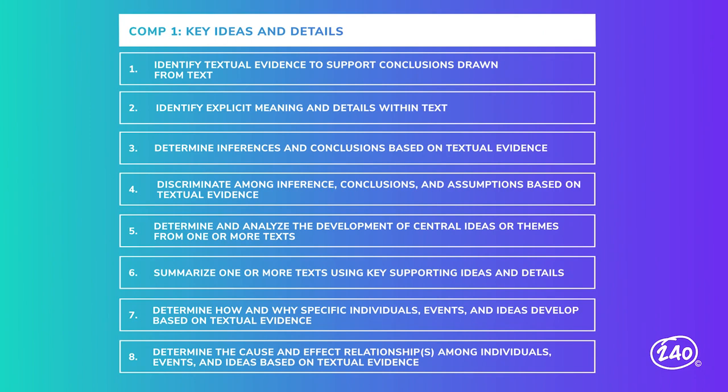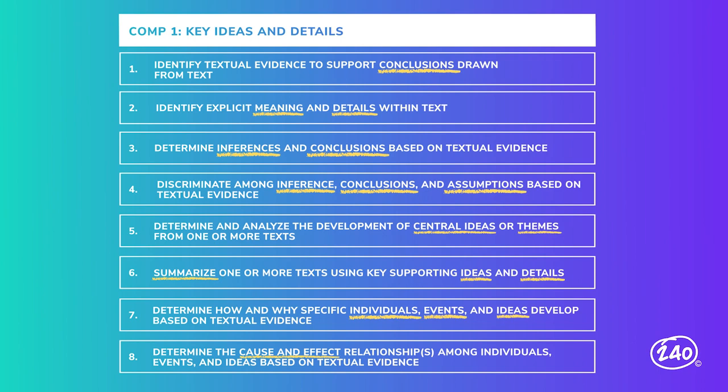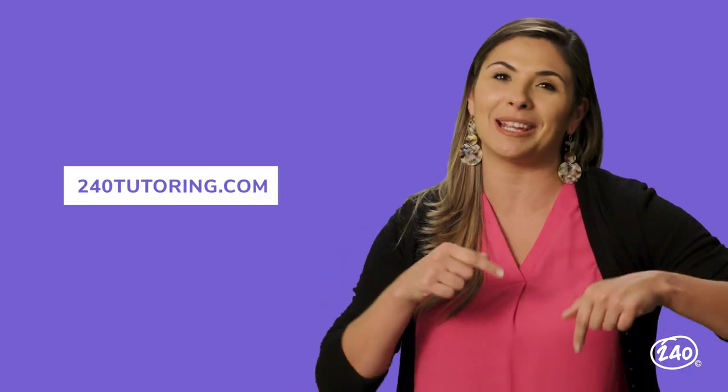Competency one is worth the largest portion of the exam at 40%. Competency one has eight skills that go along with it, and they all cover working with key ideas and details from the reading passages. Textual evidence means the part of the passage that led you to choosing your answer. Your choice should be based on the passage, not your own experience or background knowledge about the topic. Everything you need to prepare for this exam is ready in our study guide — you can find that link below.